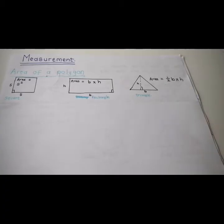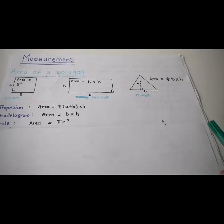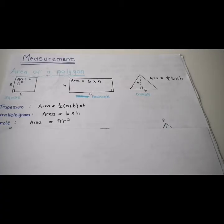The area of a triangle is half of the base times the height. For more complicated polygons: the area of a trapezium is half of (a plus b) times height. The area of a parallelogram is breadth times height. And the area of a circle is pi r squared.